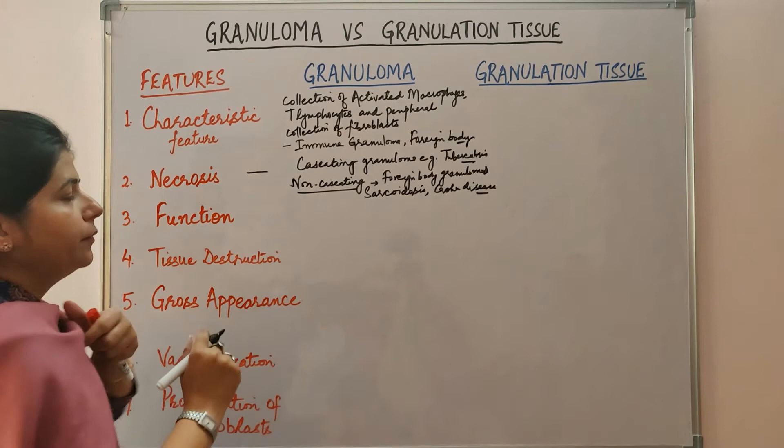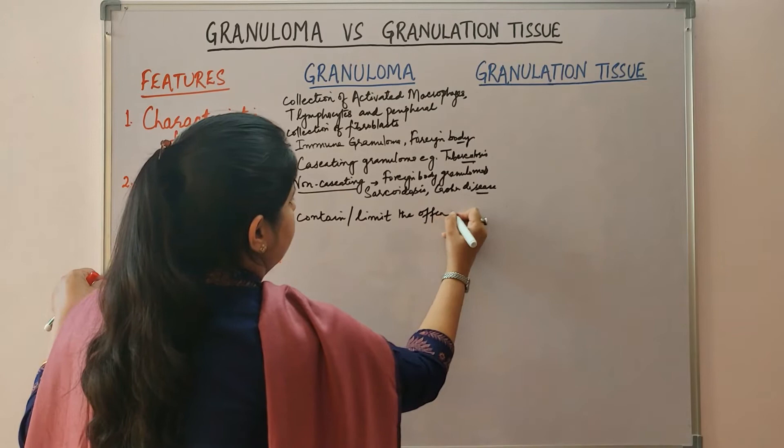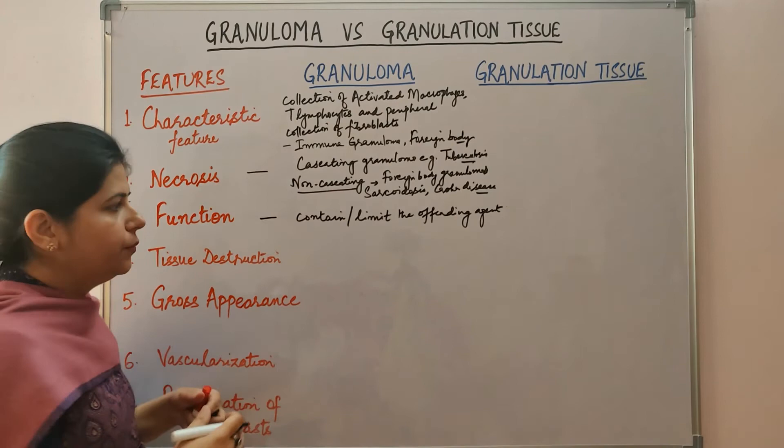What is the function of granuloma? The function is to contain or limit the offending agent — that is, an agent that is difficult to eradicate. Granuloma is associated with tissue destruction.